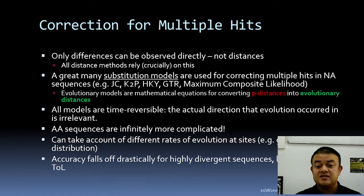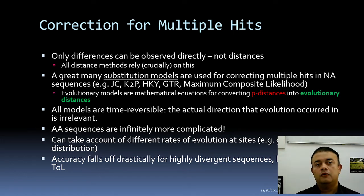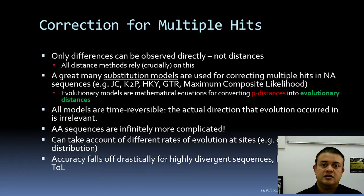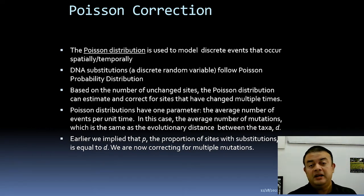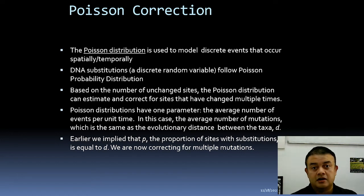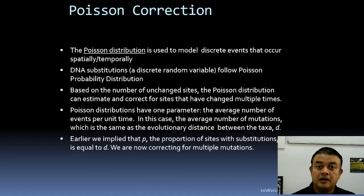Accuracy falls off drastically for highly divergent sequences such as those at the root of the tree of life. That's why correction is essential. The easiest correction beyond p-distance is the Poisson correction, which attempts to correct for multiple hits using discrete probabilistic theory — specifically the Poisson equation.